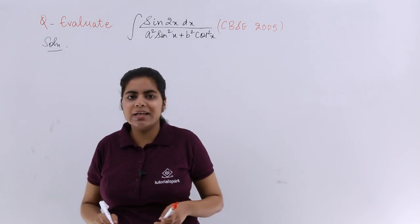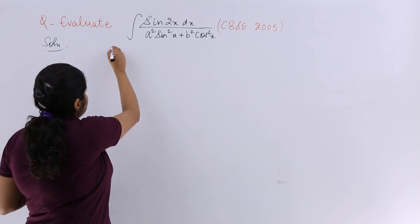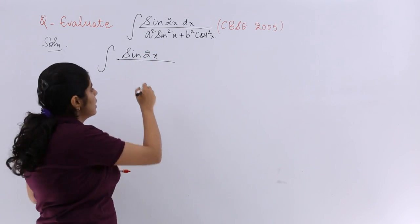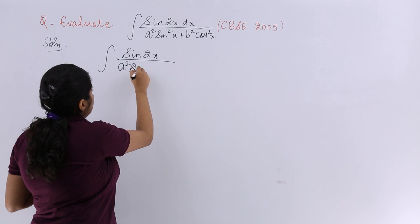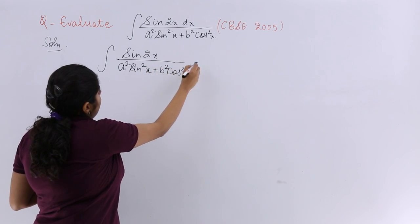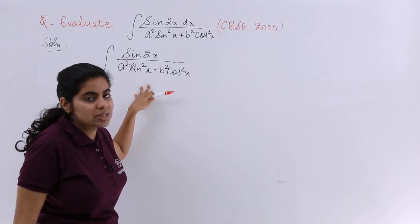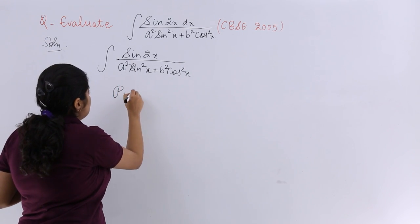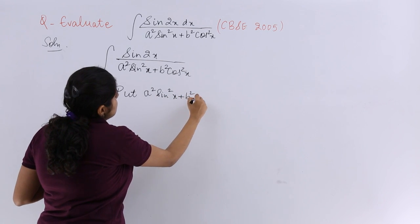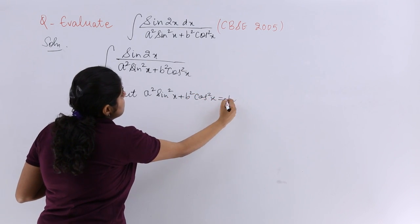So I write the solution: I have ∫(sin 2x dx)/(a²sin²x + b²cos²x). I am writing the question all over again first of all. Now if I say I need to substitute it, what will I substitute as? I will substitute the denominator, which is what is written in front of you, as say t.